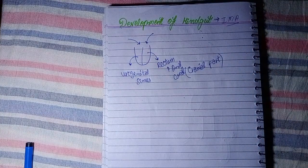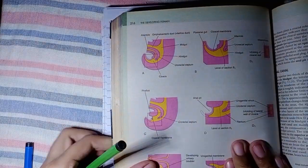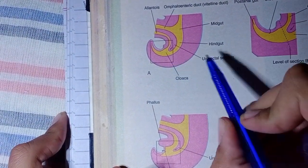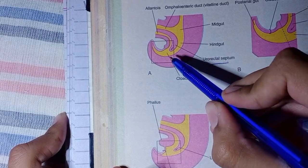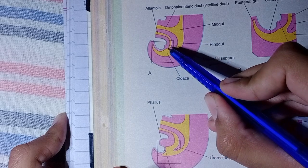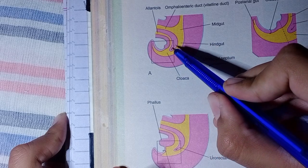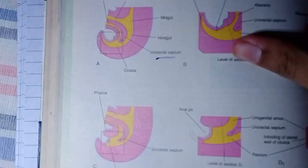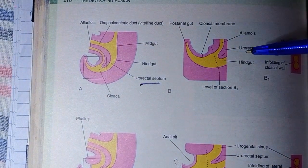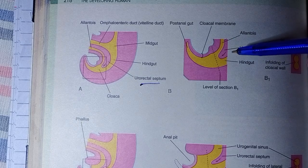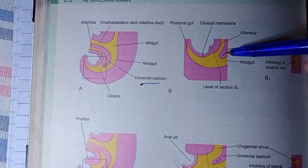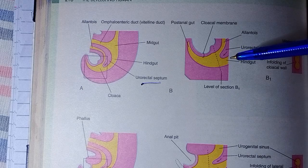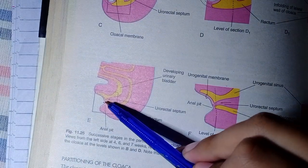Let's look at the diagram from the book. The anterior part is called urethra and urogenital sinus. As the urorectal septum descends toward the cloacal membrane, it forms the perineal body at its lower end. The cloacal membrane is divided: anteriorly it becomes the urogenital membrane, and the hindgut side becomes the anal membrane. This is called the cloacal membrane concept — the old concept.